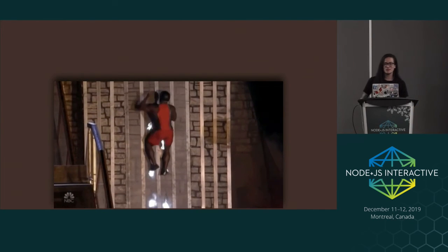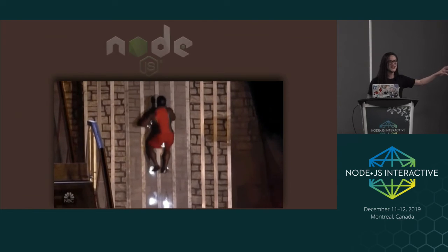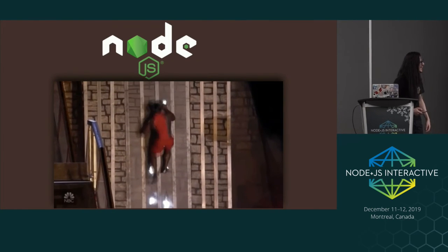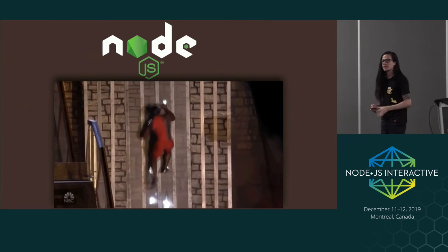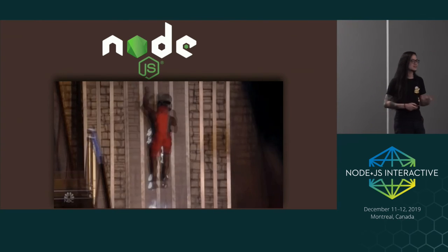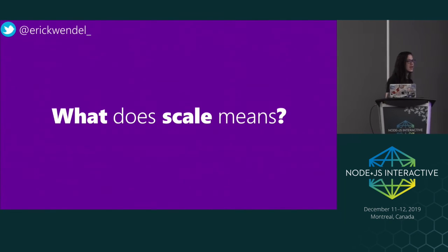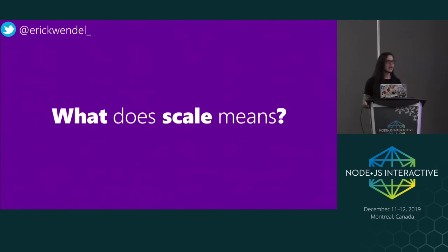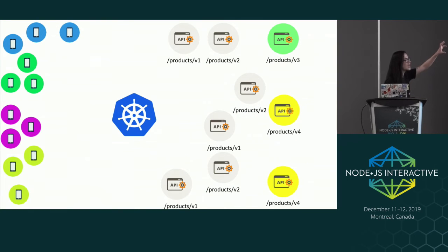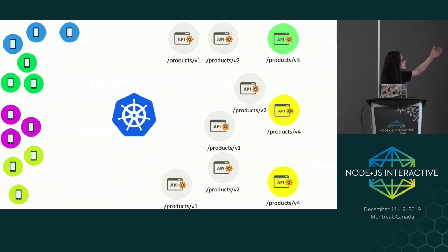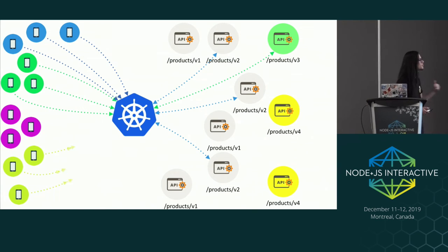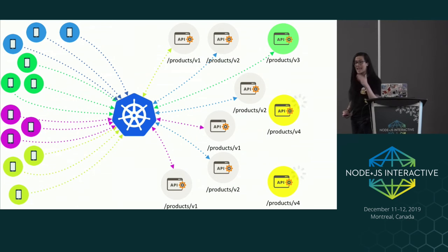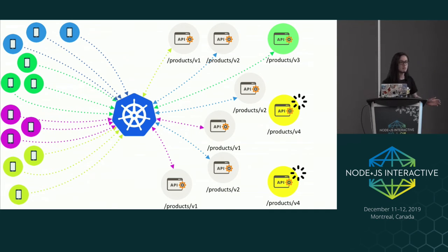We are here to talk about scaling Node.js applications. Scaling — this is my opinion — is something where you can control the chaos, control all your copies, redirect requests when you need. If you need to update at any time, you are scaling your application. If you are worried to make a deploy at midday, sometimes you are not really scaling.